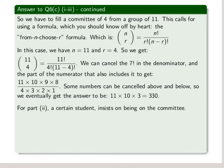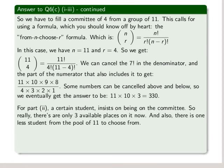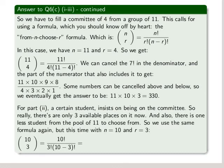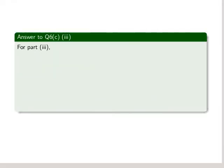That's part 1. For part 2, a certain student insists on being on the committee. So really there's only three available places on it now, and also there is one less student from the pool of 11 to choose from. So we use the same formula again, but this time with n equal to 10 and r equal to 3. So we get 10 over 3 in big brackets equals 10 factorial all over 3 factorial times 10 minus 3 factorial. We can cancel 10 minus 3 factorial, which is 7 factorial. Once again we can cancel that from the denominator and the numerator. And we get 10 times 9 times 8 all over 3 times 2 times 1, which equals 10 times 3 times 4, and that equals 120.